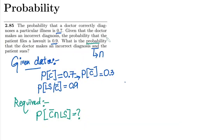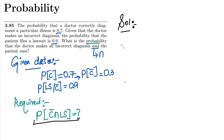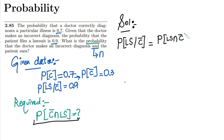To solve this, we use conditional probability and the chain rule. We know that P(lawsuit | C complement) equals P(lawsuit ∩ C complement) divided by P(C complement). This is what we need to apply here.